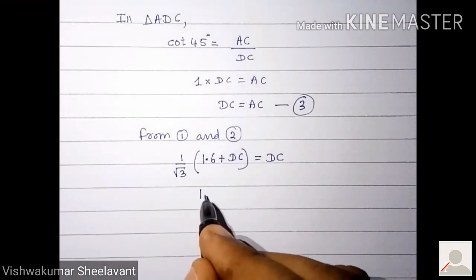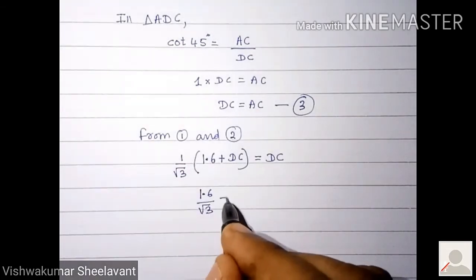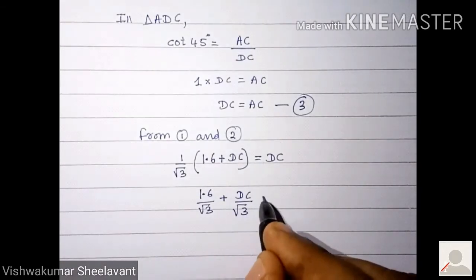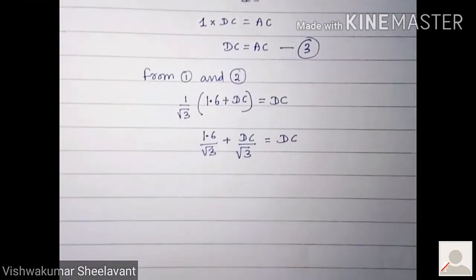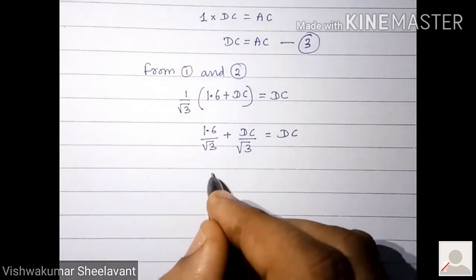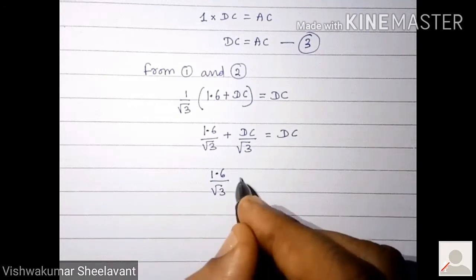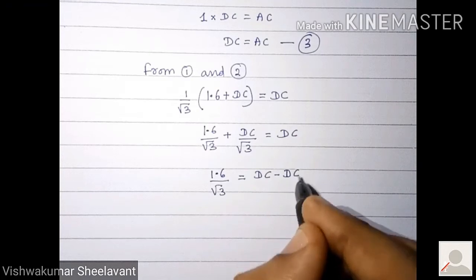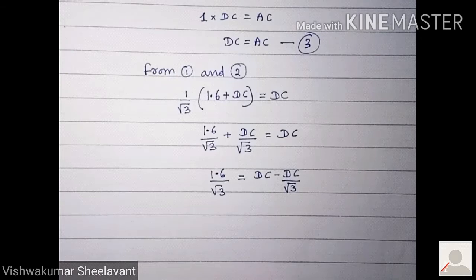Taking root 3 inside the bracket: 1.6 upon root 3 plus DC upon root 3 equals DC. Now we have to simplify for DC. So 1.6 upon root 3 equals DC minus DC by root 3.